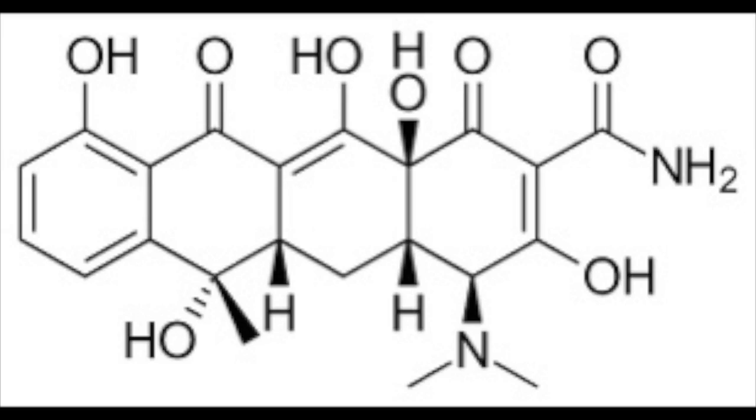Since tRNA is so vital to protein synthesis, alterations to this process can be detrimental to the organism. For example, this is a bacillus anthracis spore — not literally of course — the cause of the deadly disease anthrax, the treatment for which is a class of broad-spectrum antibiotics called tetracycline. This is the skeletal structure of tetracycline.